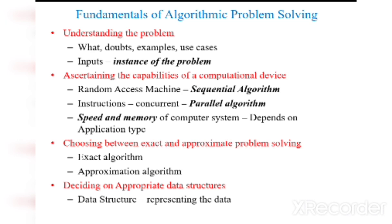Second step: ascertaining the capabilities of a computational device. We have computational devices which can perform operations in a sequential manner and parallel manner. Sequential means we have to execute an instruction after an instruction. For example, if we have 10 lines of code, the first line will be executed first, and after the completion of the first line, then we have to perform the second instruction in a sequential algorithm.